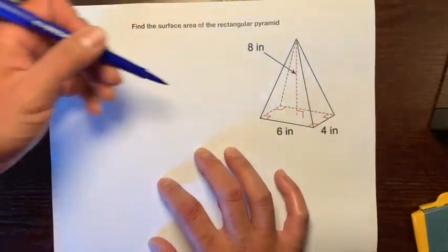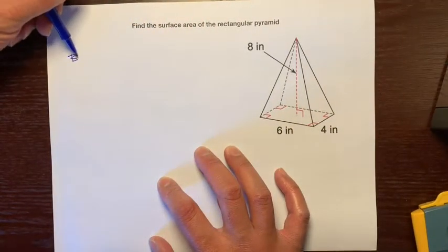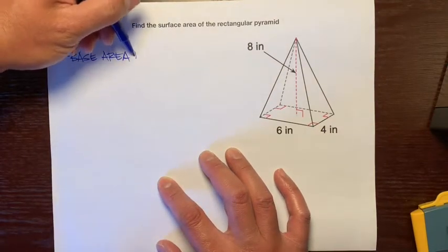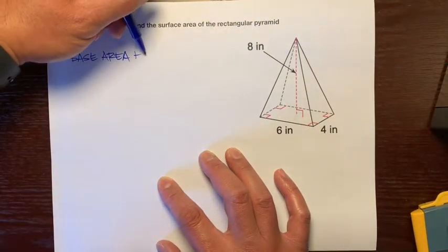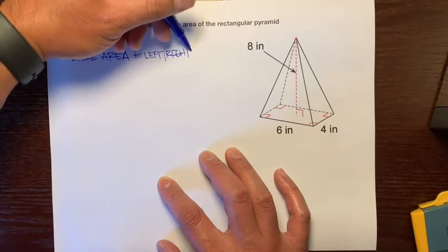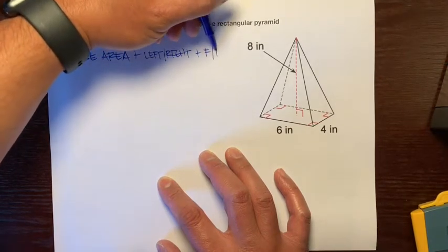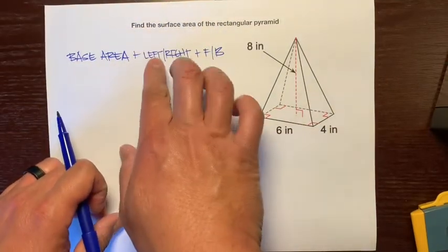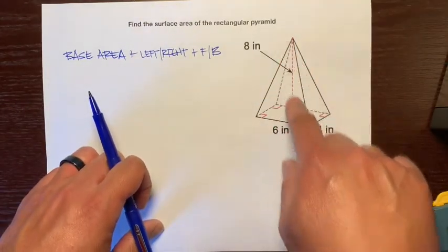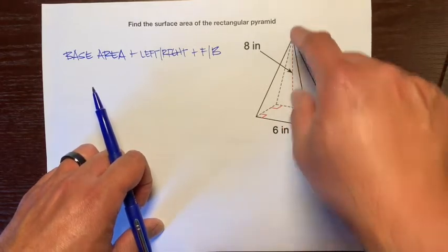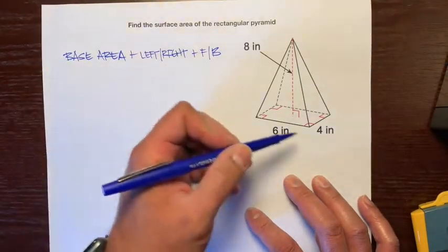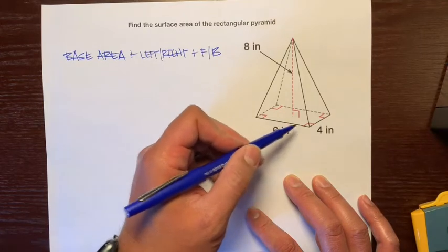Let's back up a little and figure out what exactly we need to do. We need to find the base area, plus the left and the right triangles, plus the front and the back triangles. When we have the height — the distance from the base to the apex — we need to find some slant heights. We're going to start off with finding the slant heights of the left and the right triangles.